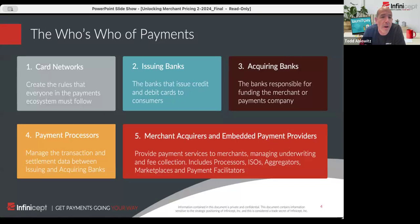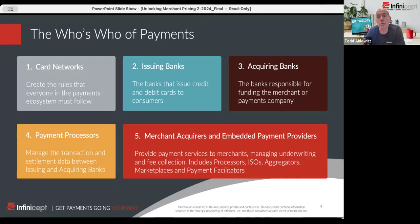The four-party model: if you think about who's who in payments, you've got a cardholder and you've got a merchant. The requirement in the US market is that every single transaction must have a bank on each side. So you've got the cardholder relying on an issuing bank and a merchant relying on an acquiring bank. And in between, of course, is the card network.